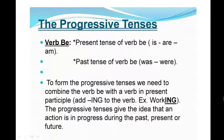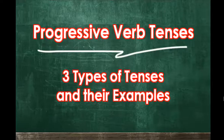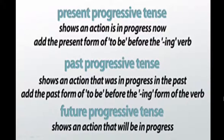So this was the Progressive Tenses. In the Progressive Verb Tenses, there are three types of tenses: the present progressive tense, past progressive tense, and the future progressive tense.